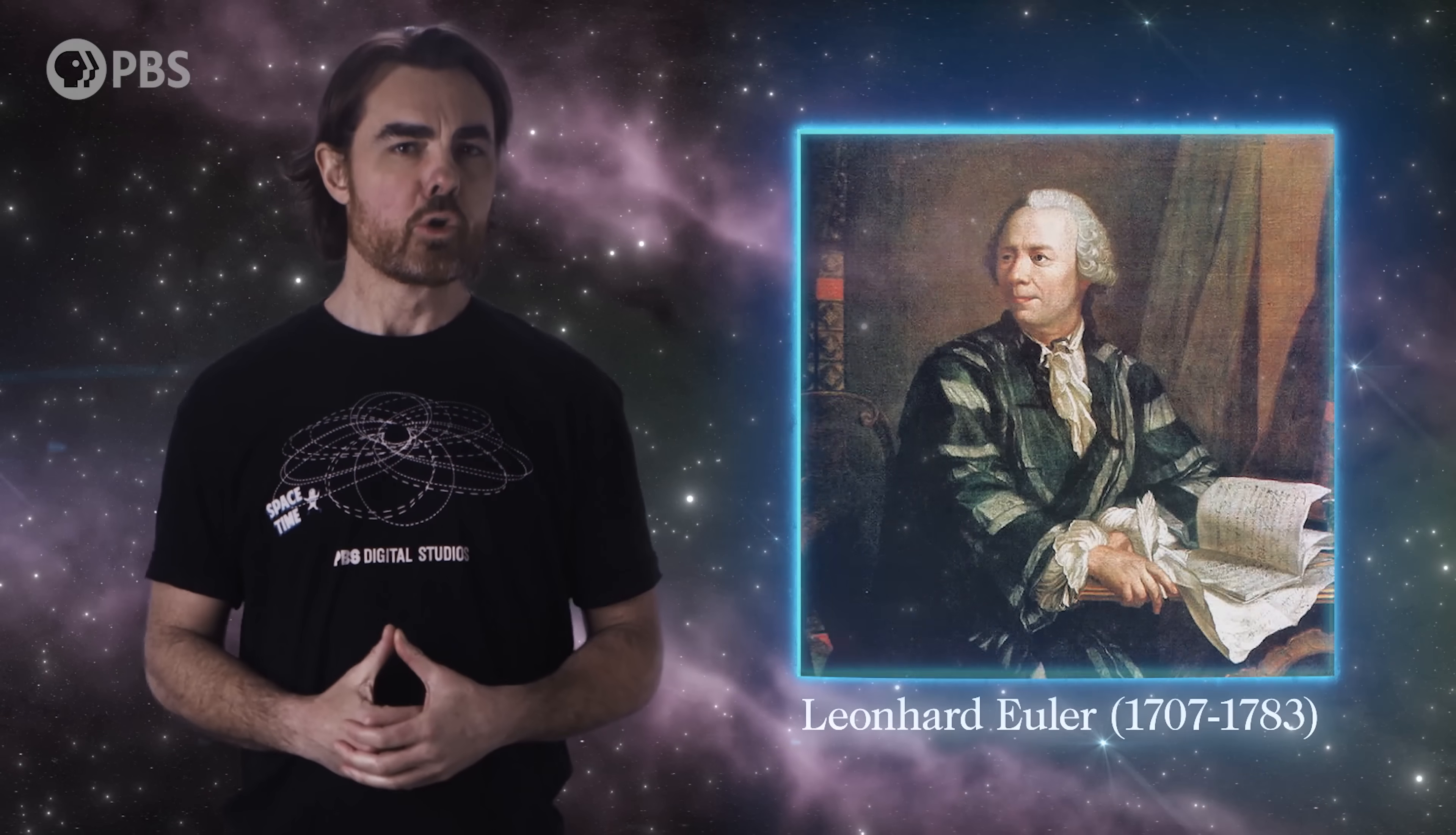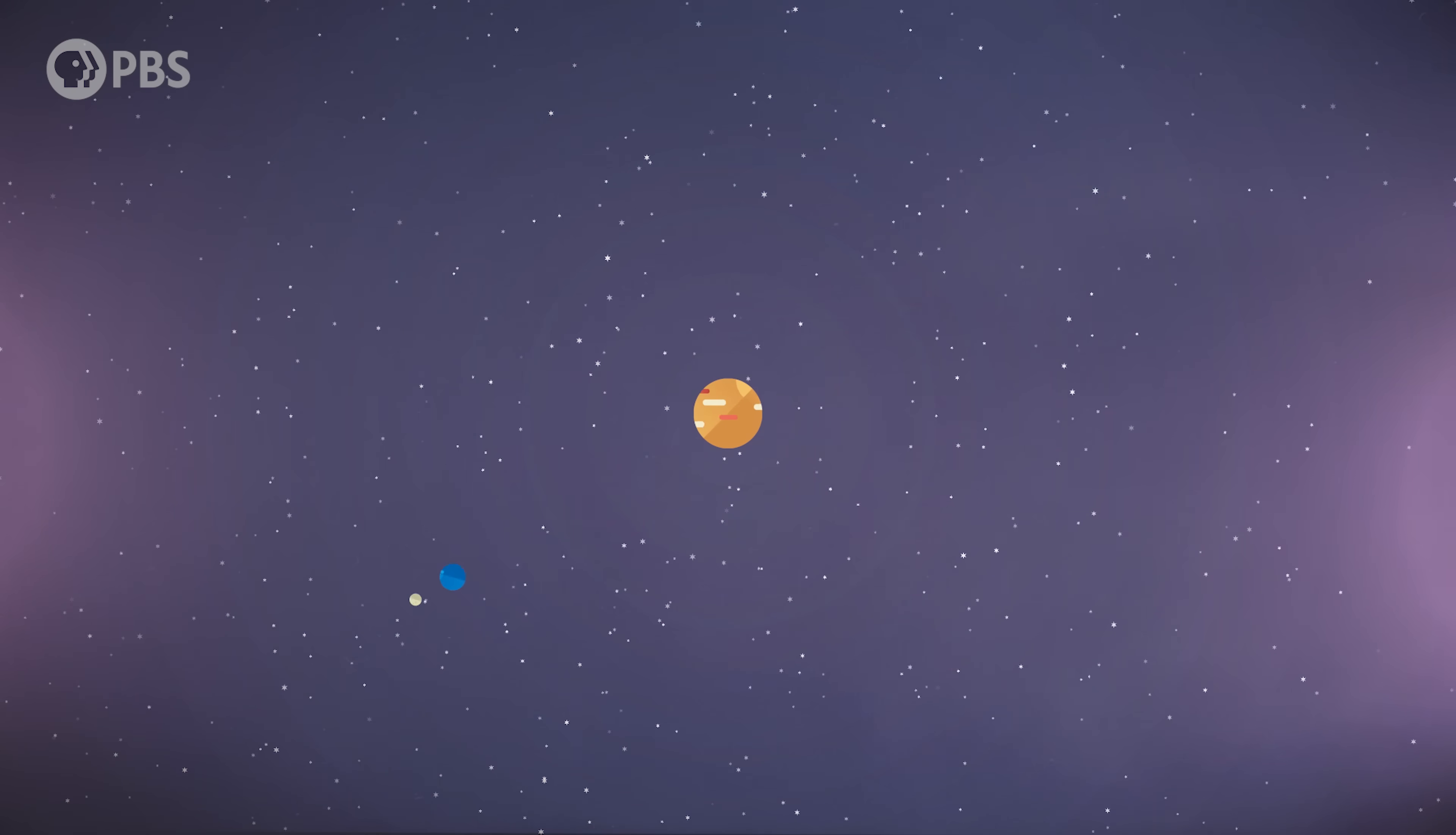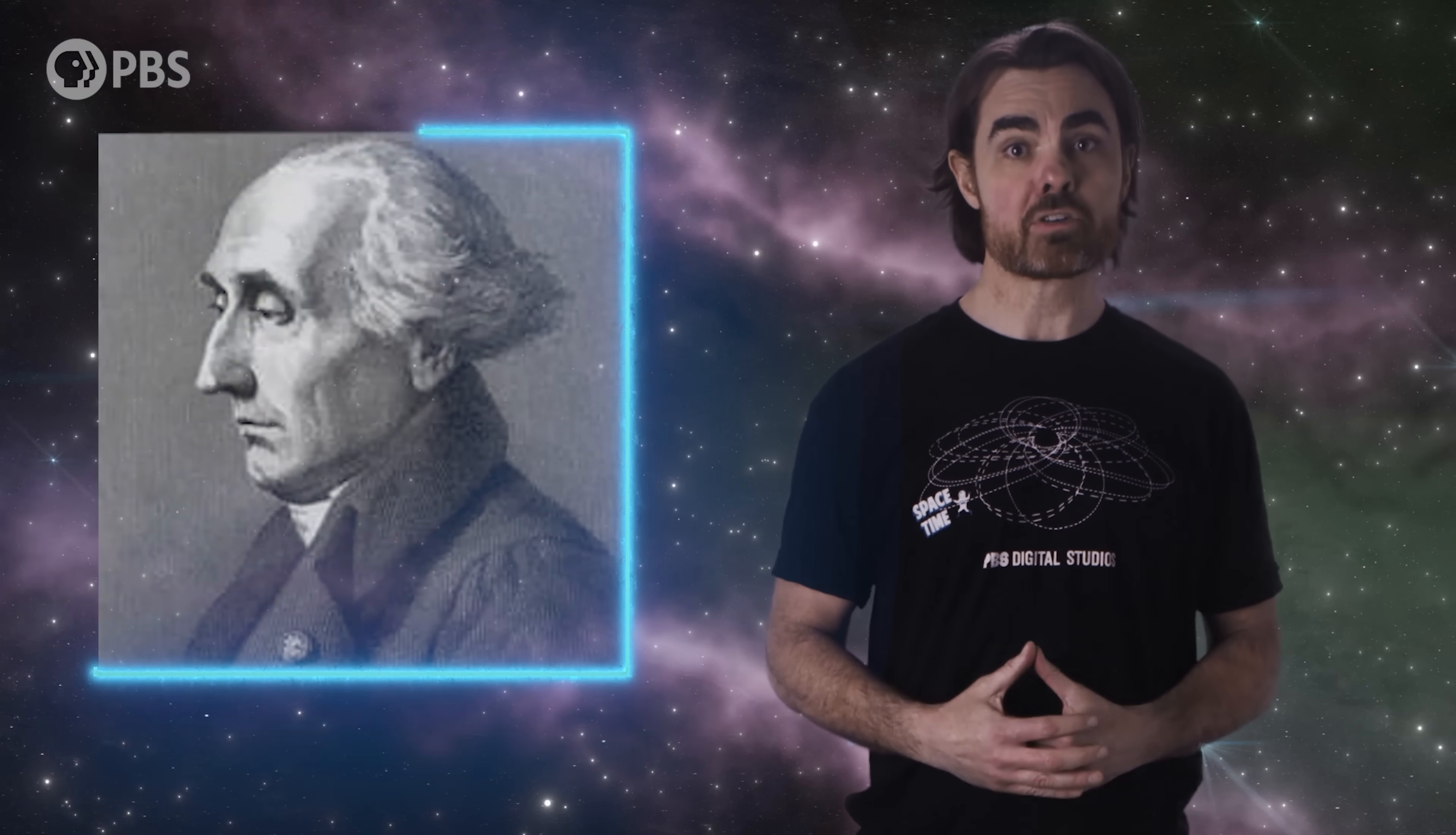The first was Leonard Euler, who found a family of solutions for three bodies orbiting around a mutual center of mass, where all bodies remain in a straight line, essentially in permanent eclipse. Joseph-Louis Lagrange found solutions in which the three bodies form an equilateral triangle.